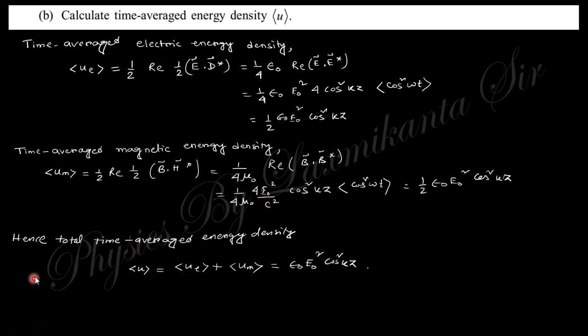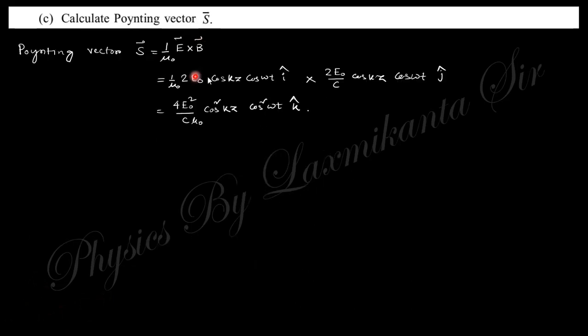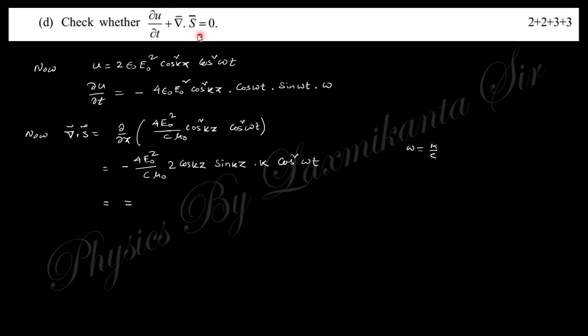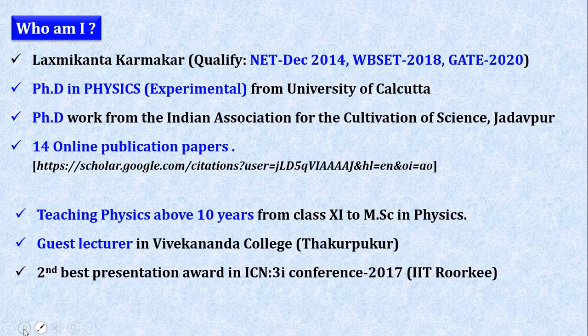Then calculate the time average of energy density. This is the electrical energy density. Take the time average, and similarly for magnetic energy—sum these things. The Poynting vector is the cross product of these, and the relation is also valid, but there is some problem in this.